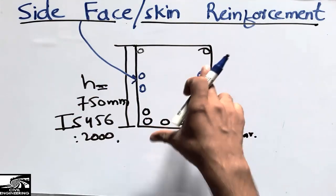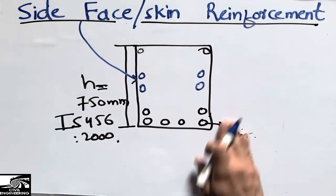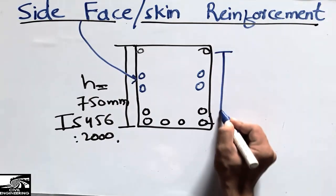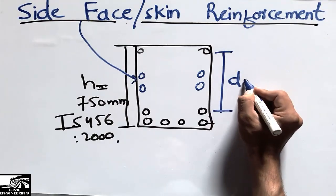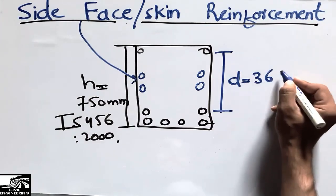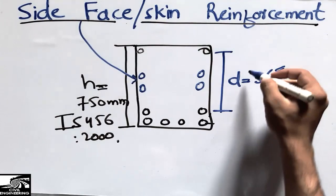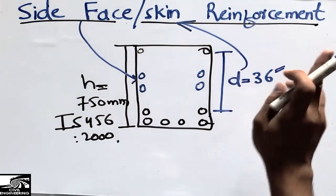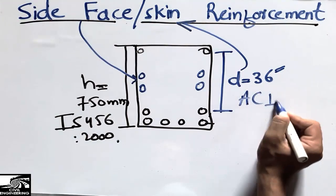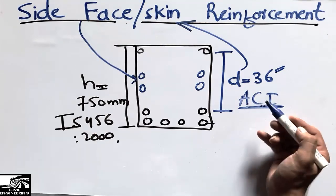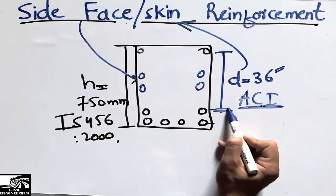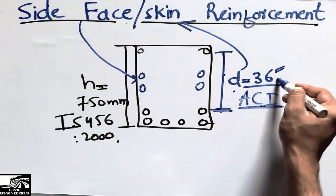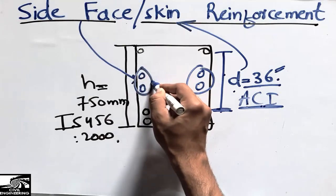Now let me explain the American standard. ACI — the American Concrete Institute — talks about the effective depth of the beam, which is the depth between the top bars and the bottom bars. When this effective depth D is equal to or greater than 36 inches, we place this reinforcement, which is called the side face or skin reinforcement.